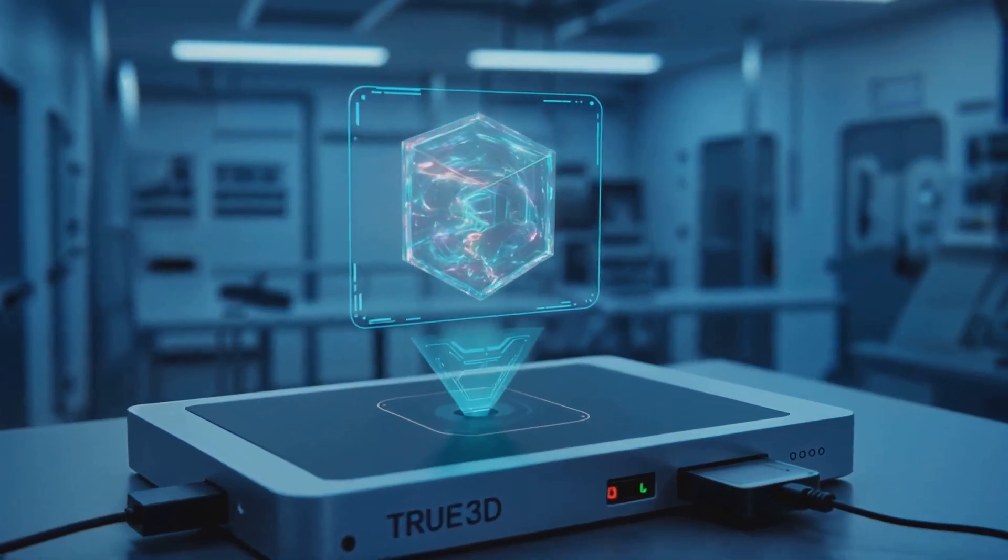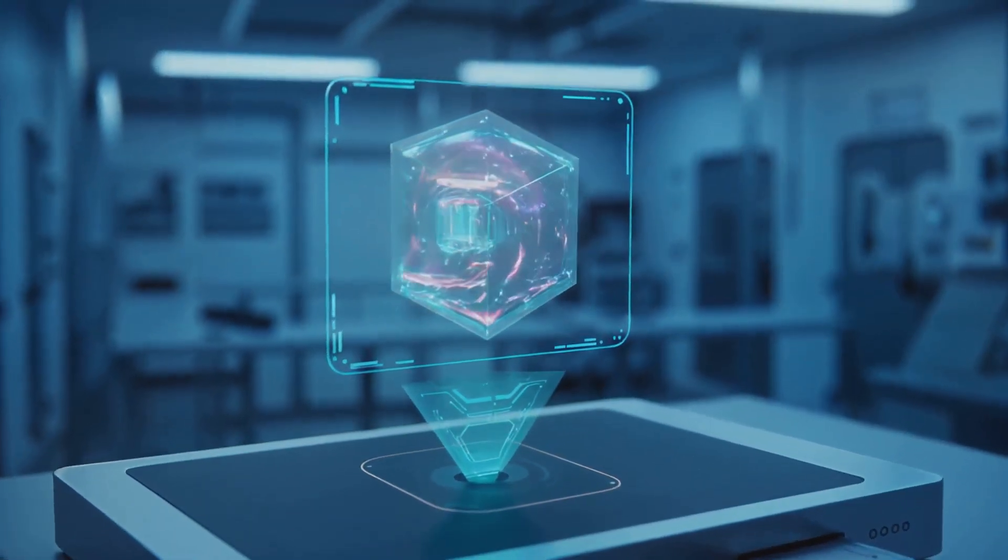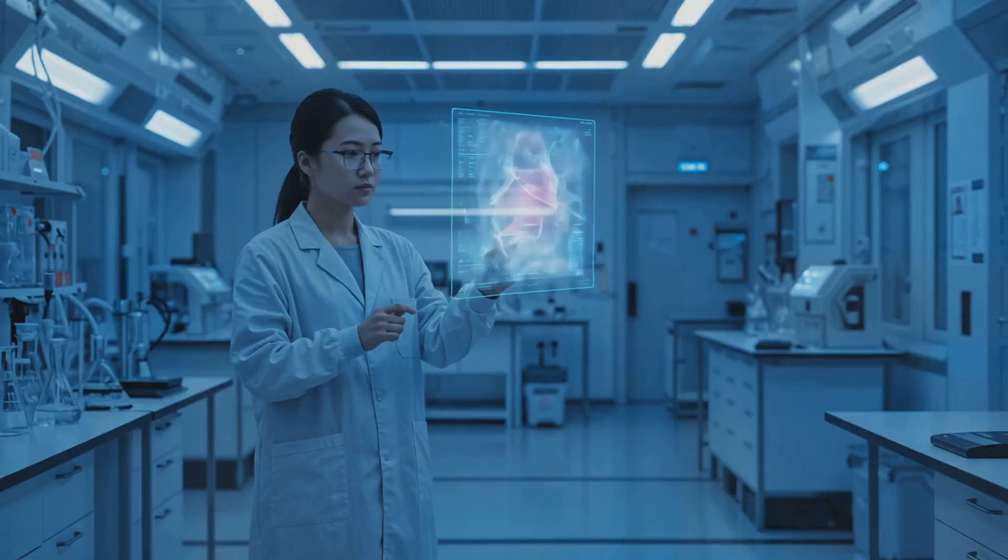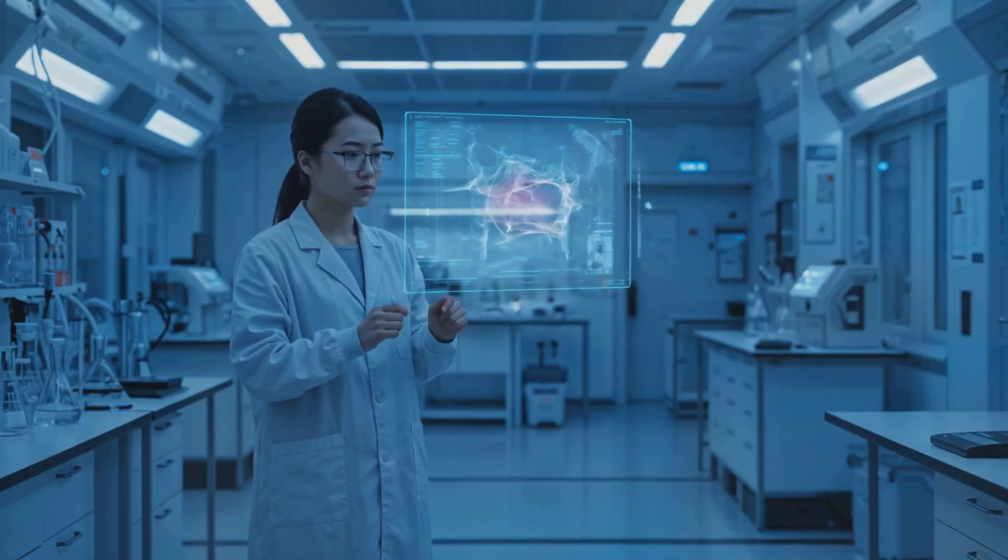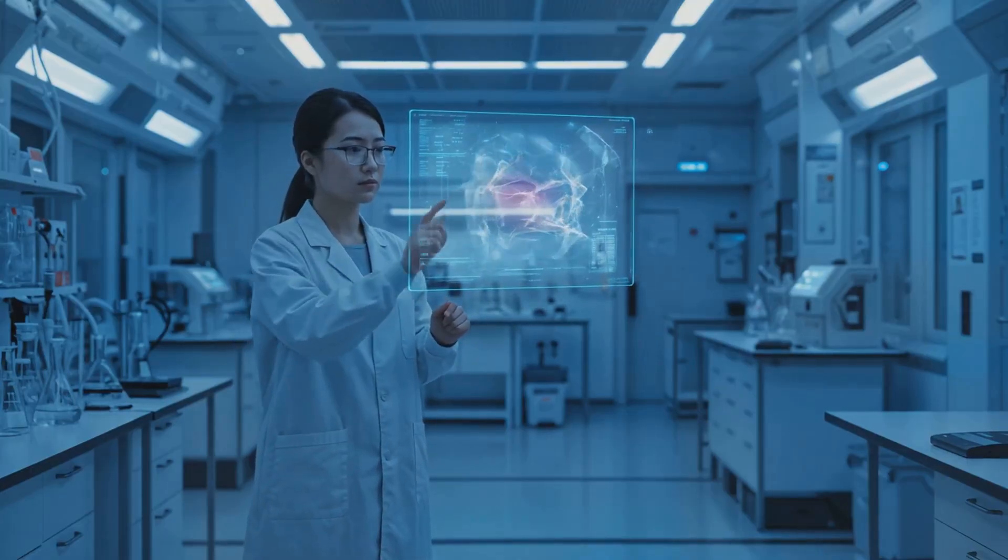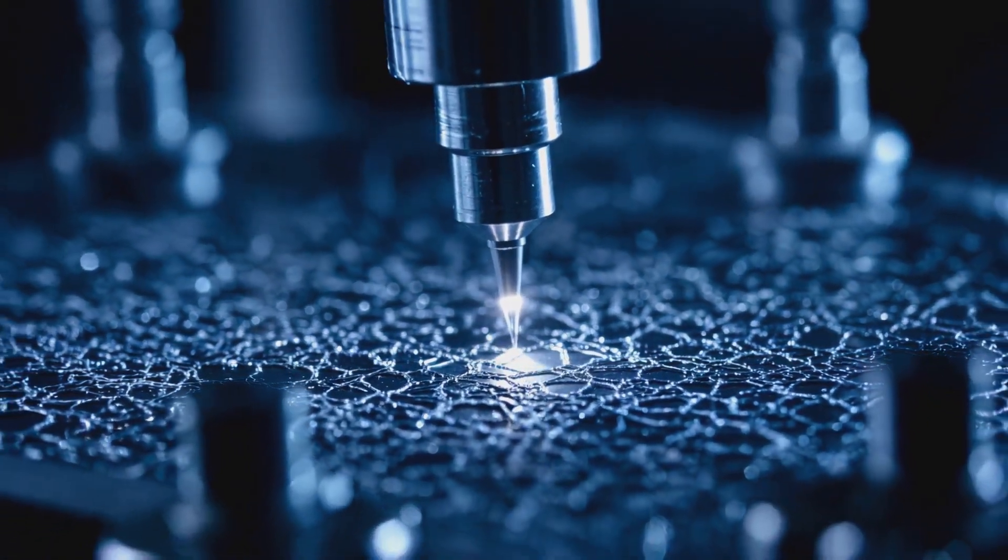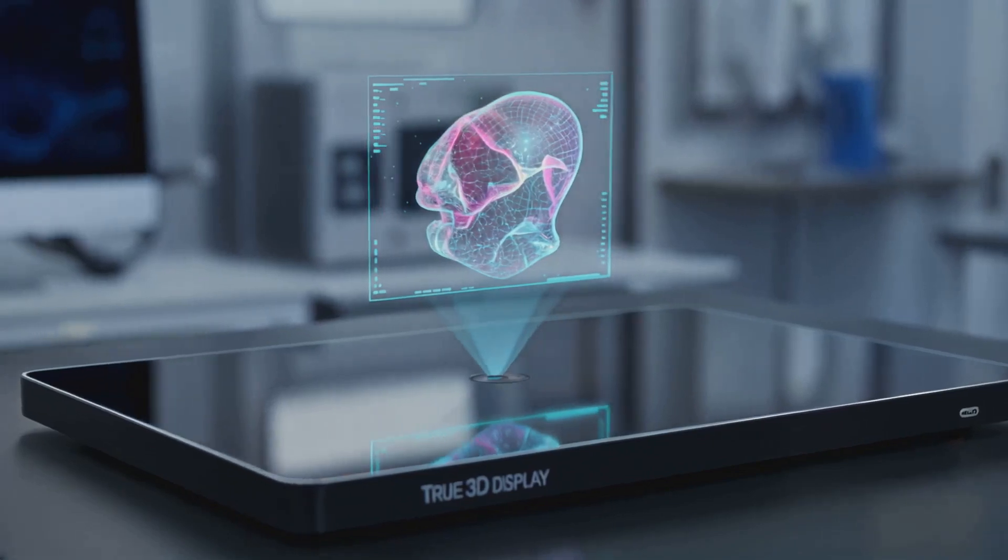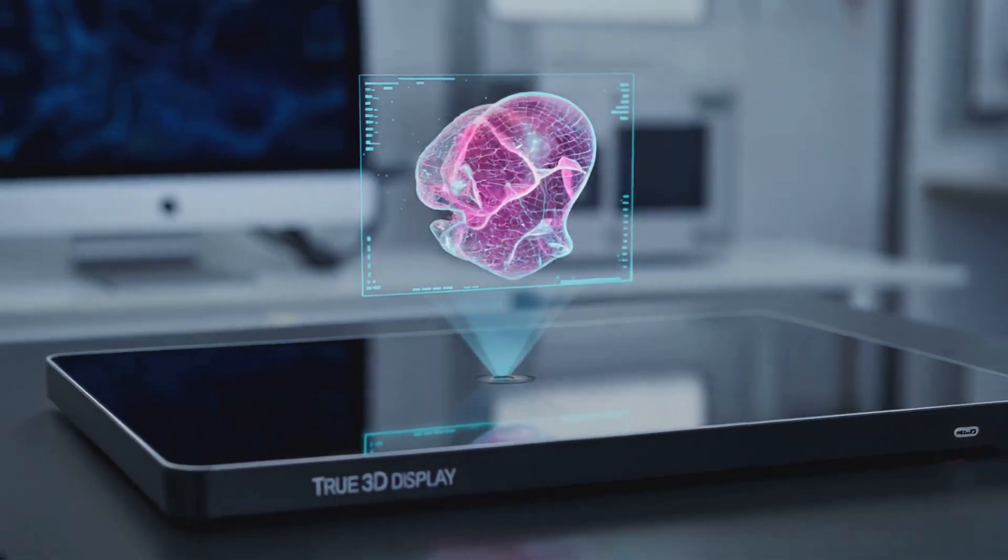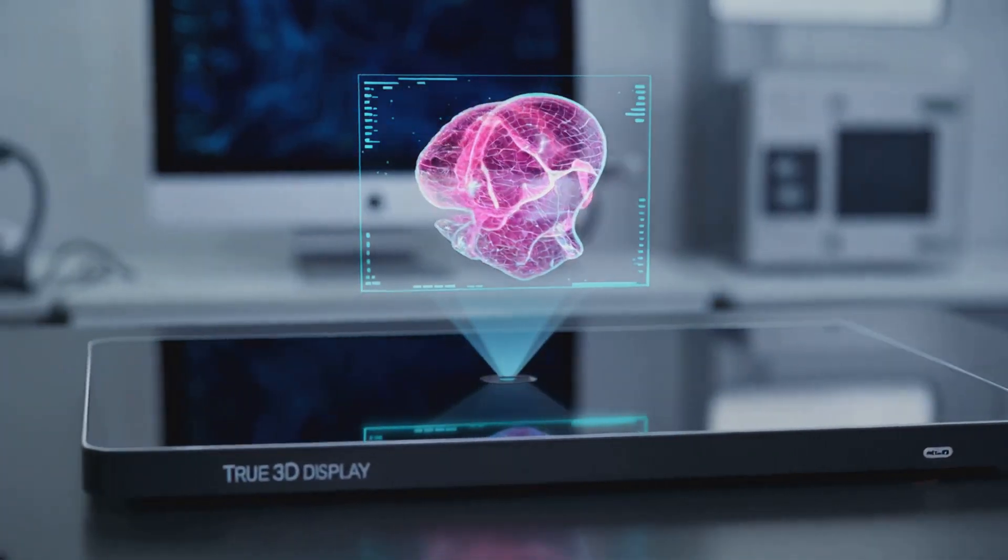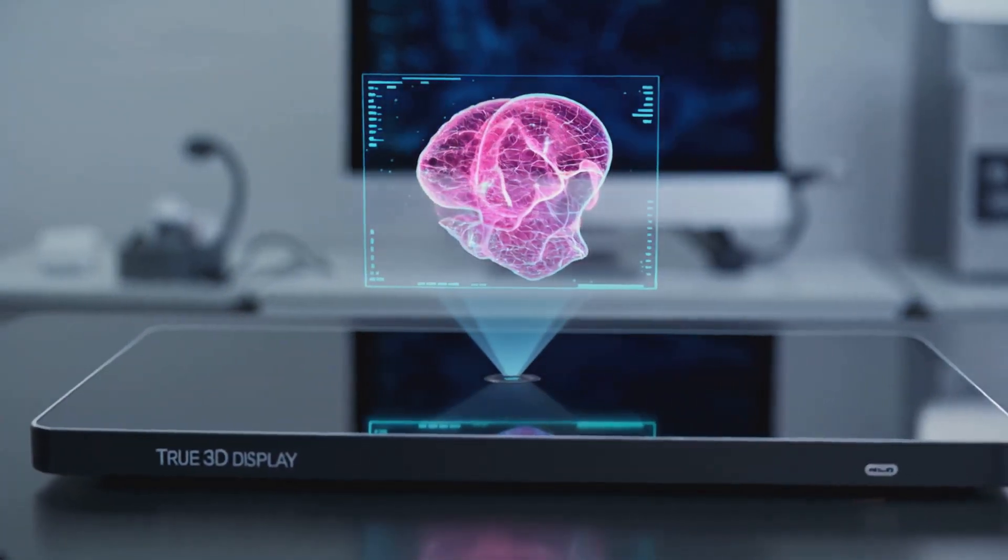Everything inside this display already exists today. The quantum dots are used in QLED TVs. The nanophotonic lattice is etched using standard electron beam lithography. The control software is based on real-time frequency rendering algorithms. And all of this fits inside a thin, scalable sheet. No moving parts. No external projectors. Just a window into light's own structure.